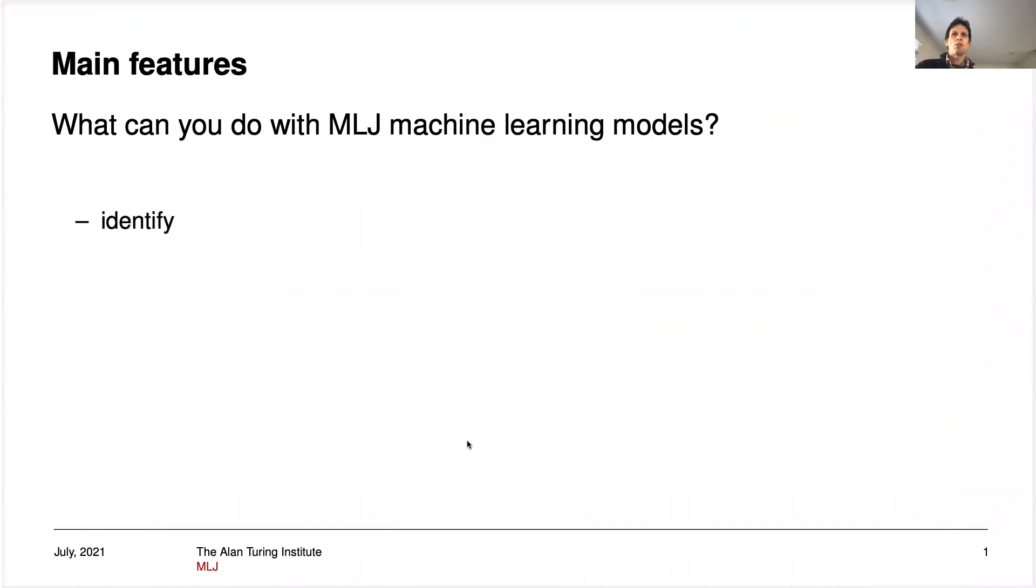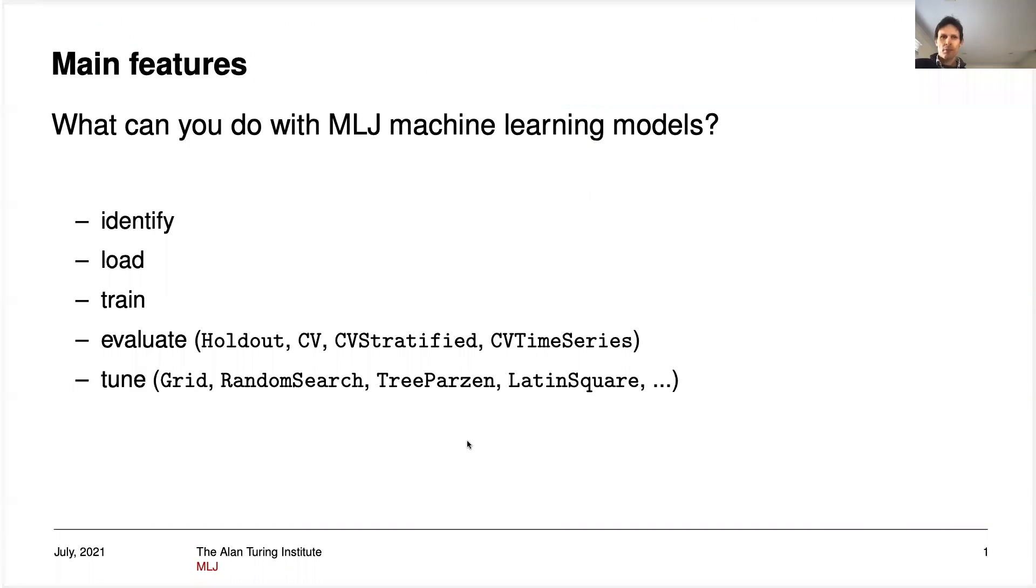You can do things like identify models—that is, match models to data—load model code conveniently, train models, estimate their performance, tune their hyperparameters, and finally compose multiple models.